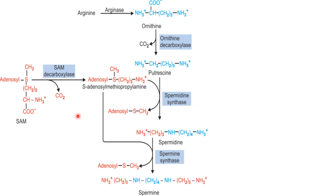Again, S-adenosylmethiopropylamine donates the aminopropyl group to spermidine, leading to the synthesis of spermine, with the enzyme spermine synthase. That is how these three important polyamines are synthesized from ornithine and methionine. Ornithine is synthesized from arginine, and the polyamines produced are: first putrescine, then spermidine from putrescine, and spermine from spermidine.